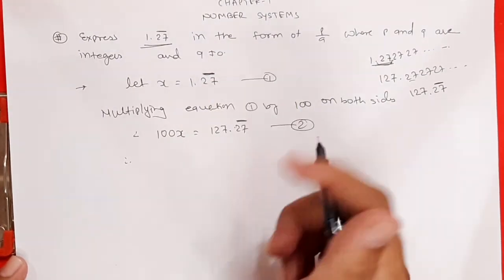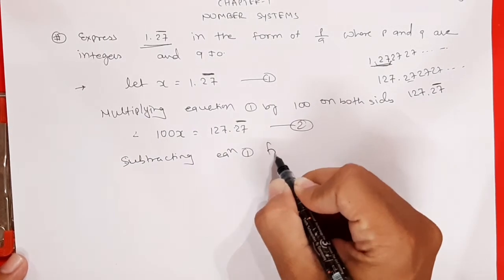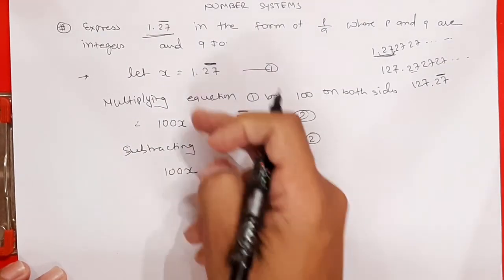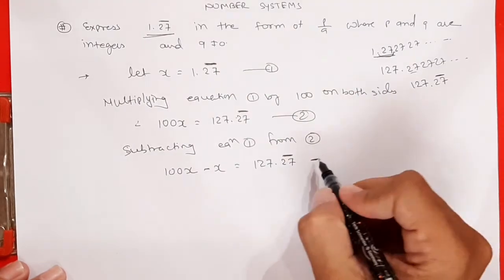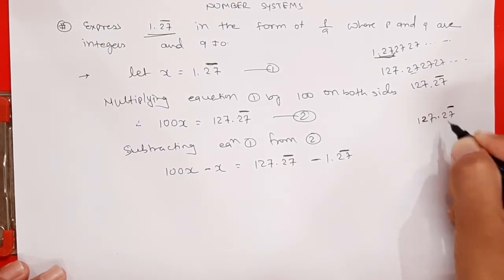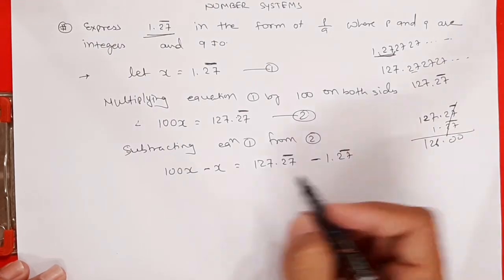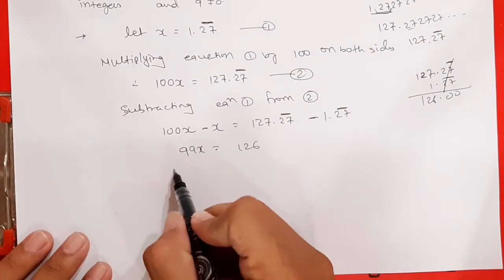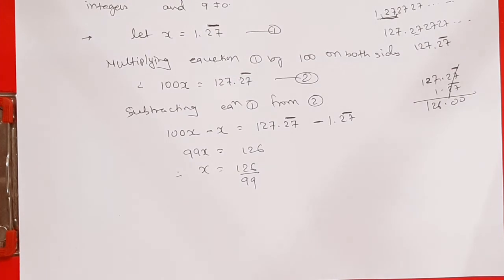Ab subtracting equation 1 from equation 2. 100x minus x is equal to 127.27 bar minus 1.27 bar. 127.27 bar minus 1.27 bar — .27 bar dono cancel ho jaata hai. Toh 99x is equal to 126. Therefore x equals to 126 upon 99.